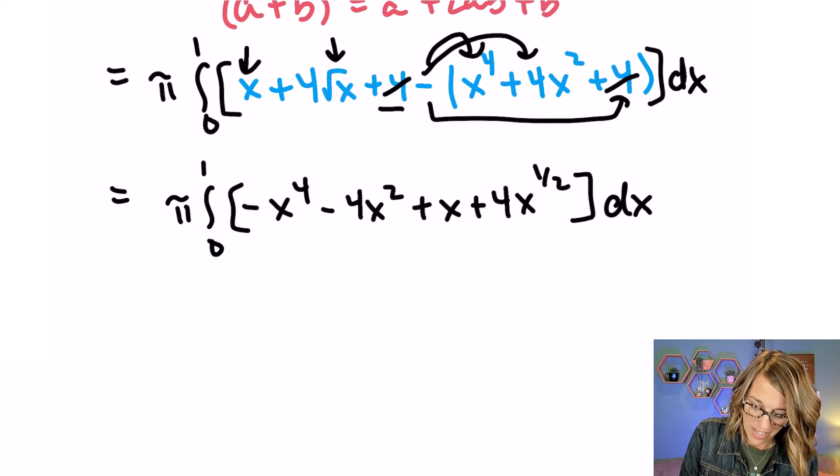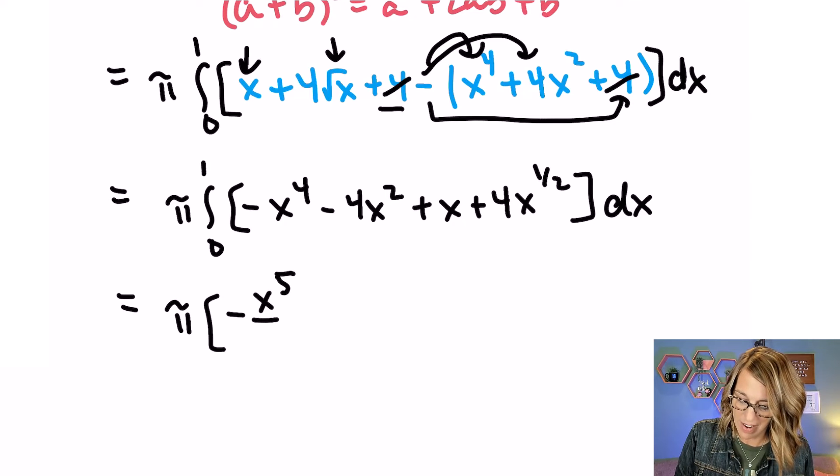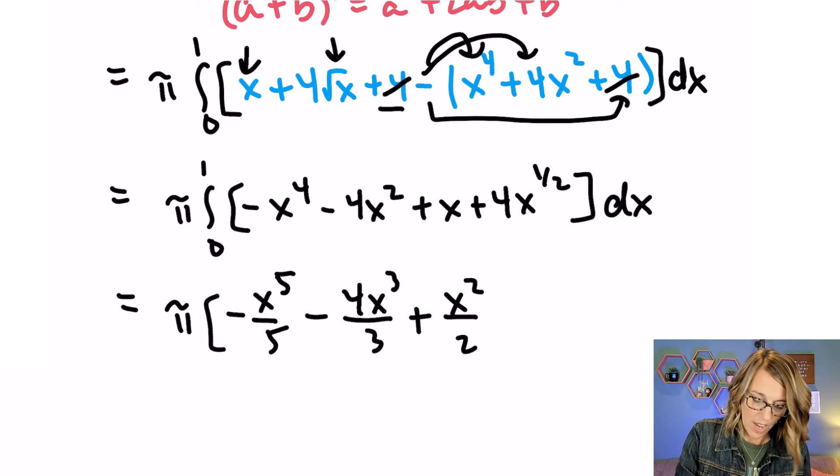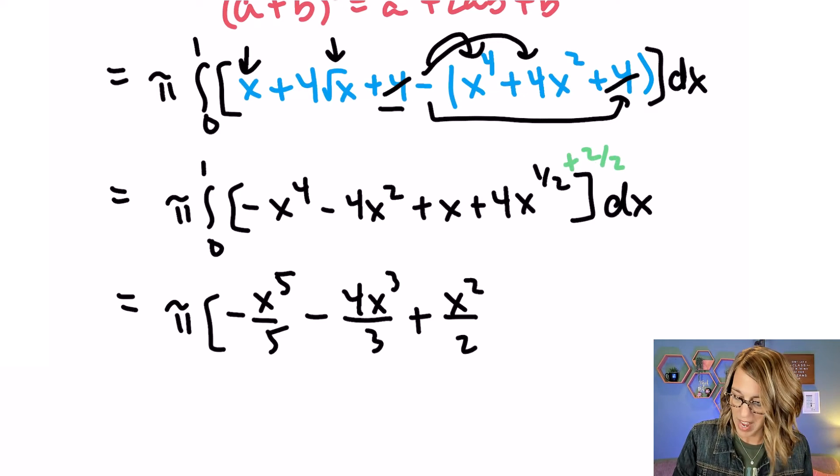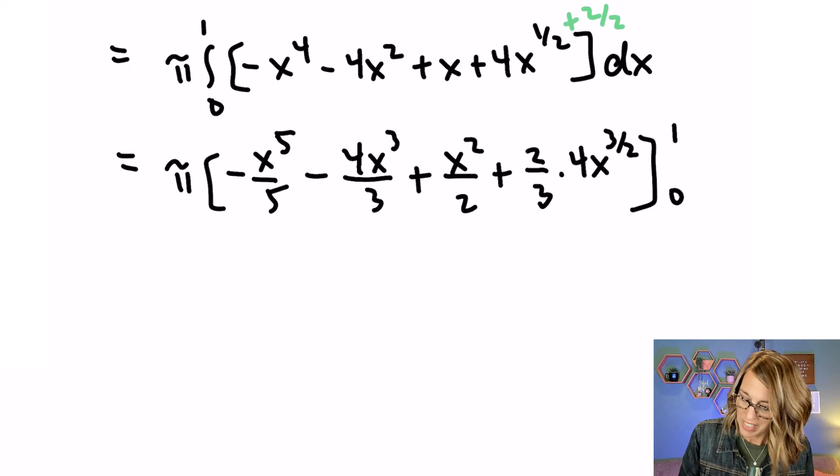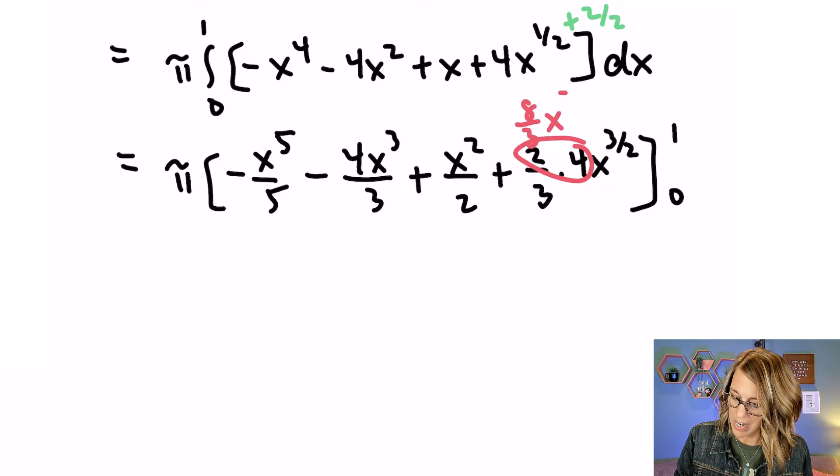Let's go ahead and apply that power rule. So I've got pi. The x to the fourth becomes negative x to the fifth divided by 5 minus 4. 2 goes to 3 divided by 3. x becomes x squared divided by 2. And for that 1 half I'm going to add a 1. But really it's a 2 over 2. So I end up with a new power of 3 halves. And I'm going to multiply by 2 thirds times 4x to the 3 halves. Evaluating that from 0 to 1. Cleaning this up just a little bit. I can do 4 times 2 here. So this is really 8 thirds x to the 3 halves power.